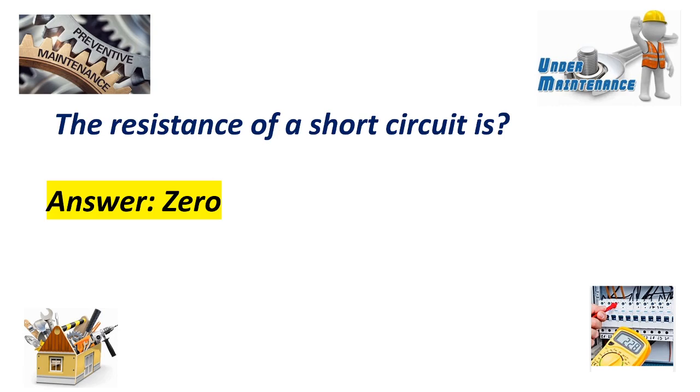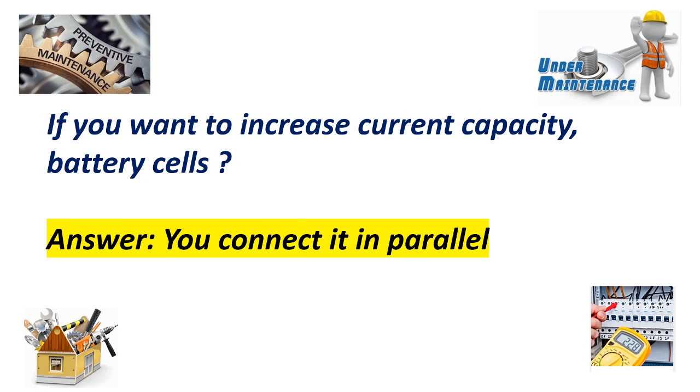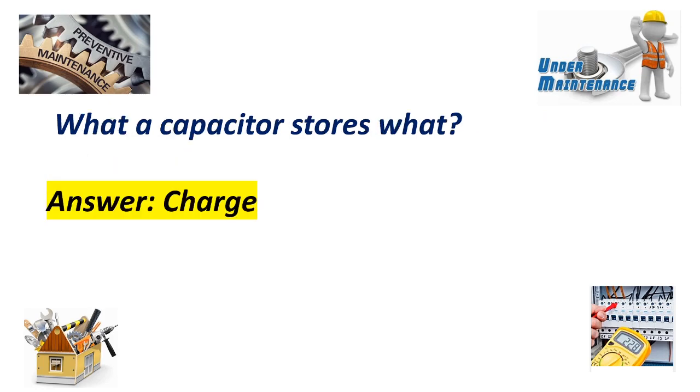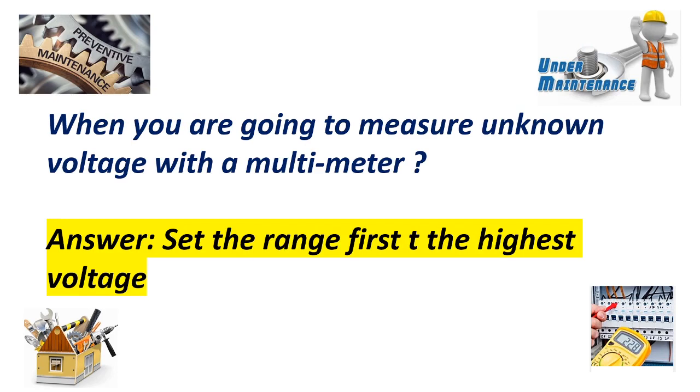The resistance of a short circuit is zero. If you want to increase current capacity in a battery cell, you connect it in parallel. What are capacitors stores charge? When you are going to measure an unknown voltage with a multimeter, set the range first to the highest voltage.